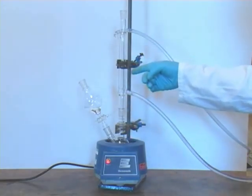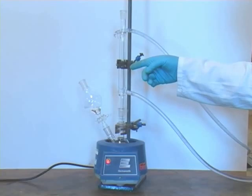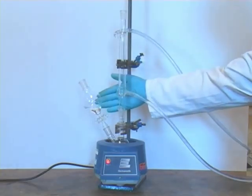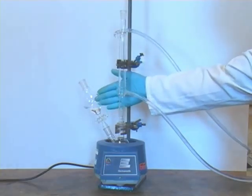Above our reaction flask, we have a condenser in an upright position. In the other neck of the flask, we have a dropping funnel which contains the solution of the other reagent we need to add to the reaction mixture.